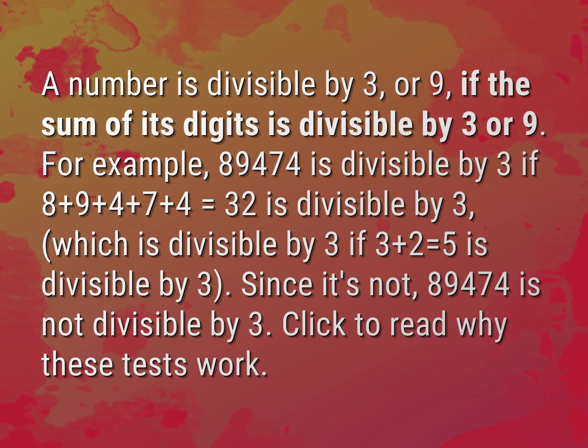89,474 is divisible by 3 if 8 + 9 + 4 + 7 + 4 = 32 is divisible by 3, which is divisible by 3 if 3 + 2 = 5 is divisible by 3. Since it's not, 89,474 is not divisible by 3.